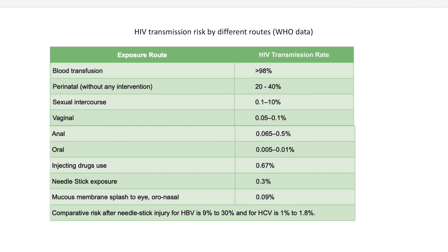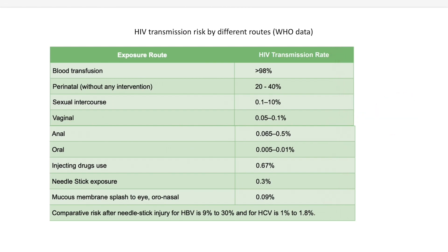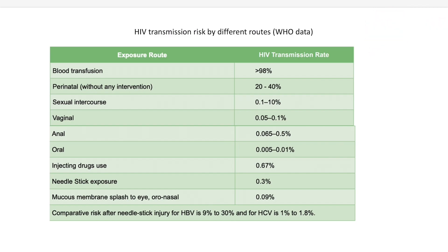This is all the risk of transmission statistics related to HIV. At the same time, when there is exposure to blood or a needle stick injury as an occupational hazard, we should also be worried about the transmission of HBV and HCV. The risk of HBV transmission after a needle stick is almost 9 to 30 percent, and hepatitis C virus transmission is 1 to 1.8 percent.